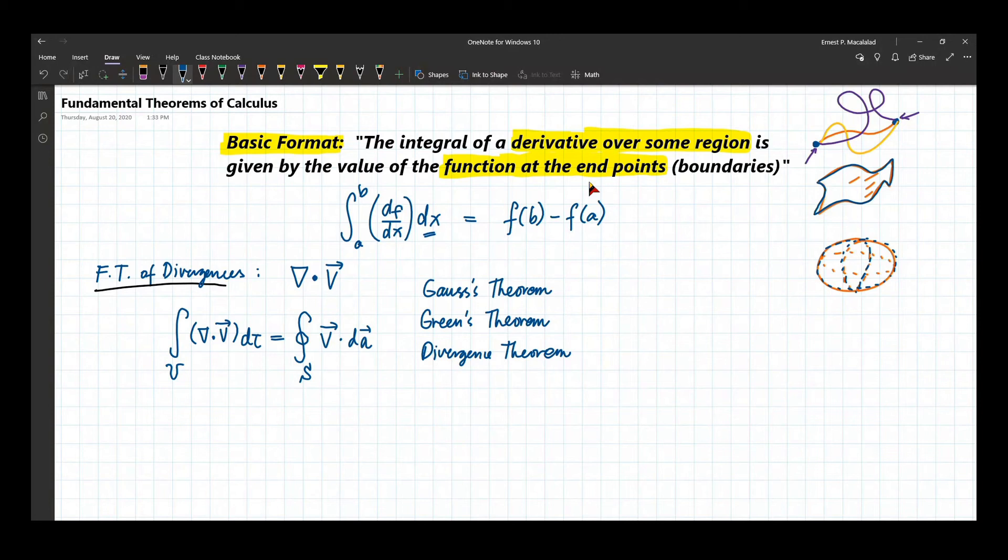So in our context here, Gauss's theorem, Green's theorem, and divergence theorem are the same. It basically tells us that we can express a volume integral as a surface integral as long as you know the relationship between the functions. And we're going to use this in converting Gauss's law from integral form to its differential form, which we're going to talk about in the coming weeks.